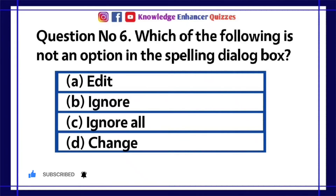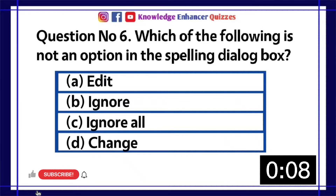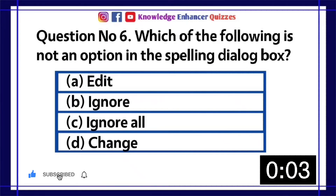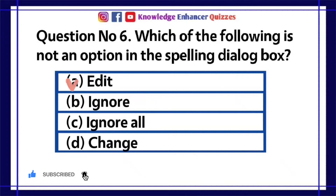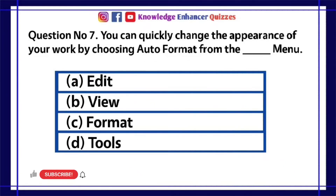Question number 6: Which of the following is not an option in the spelling dialog box? A. Edit  B. Ignore  C. Ignore all  D. Change. Option A is the right answer.